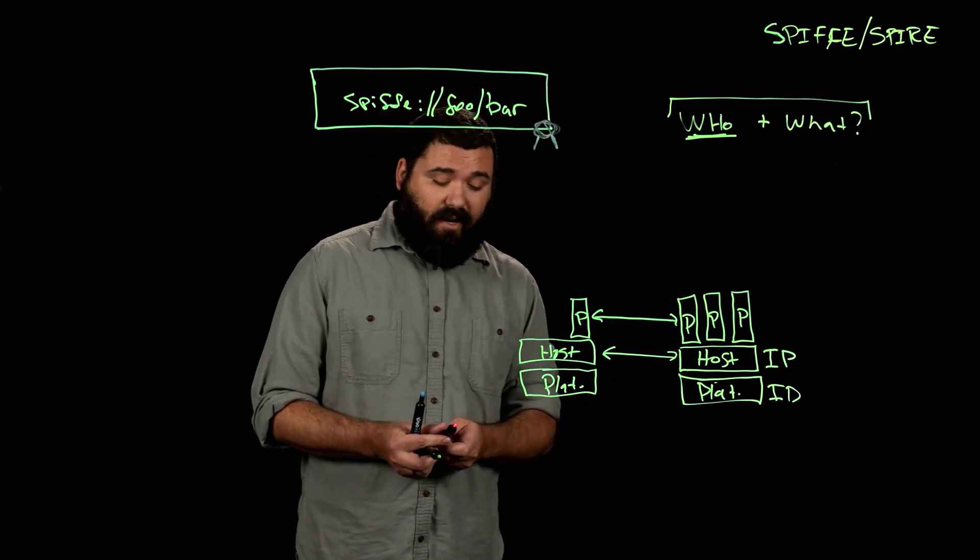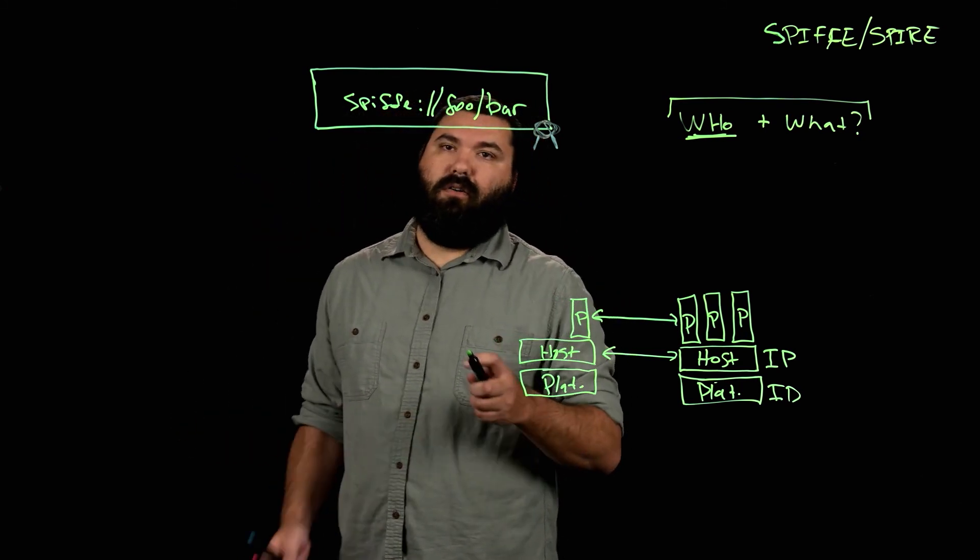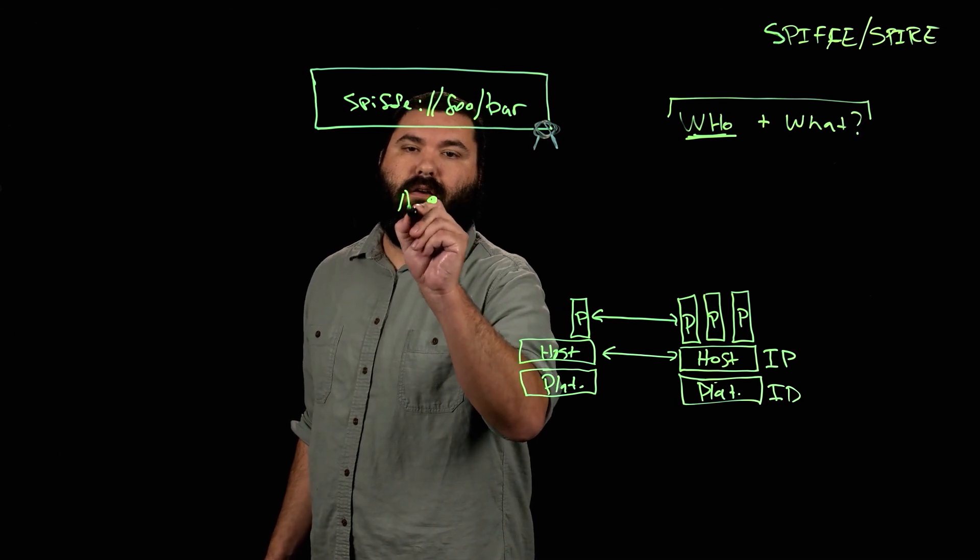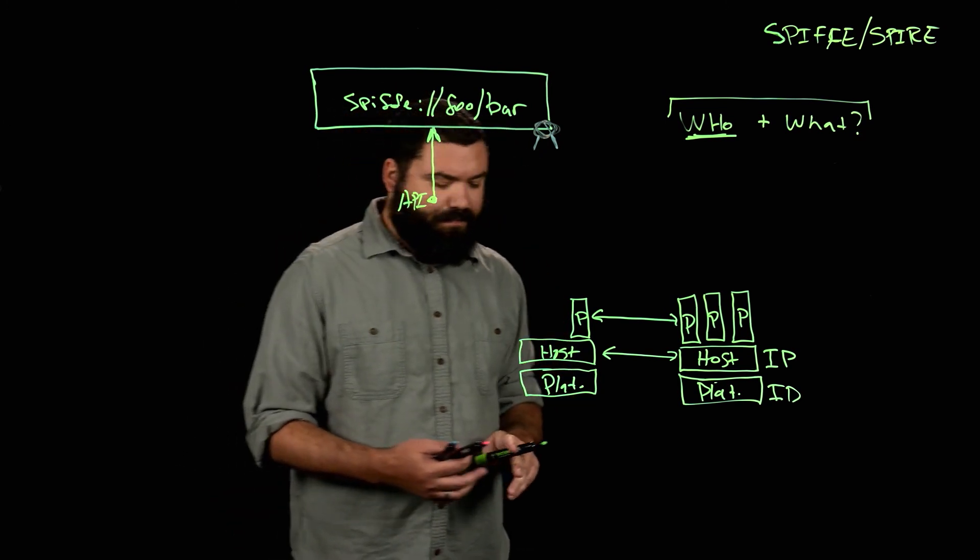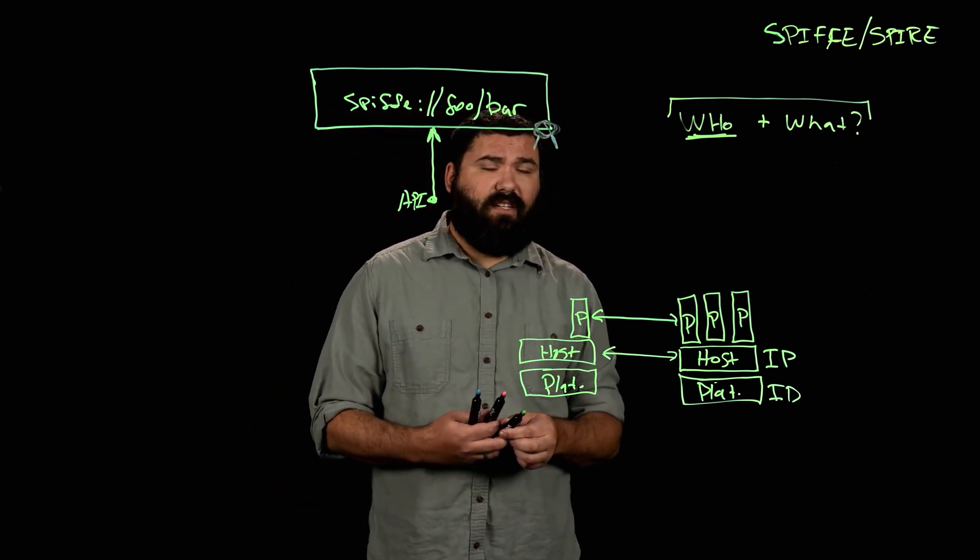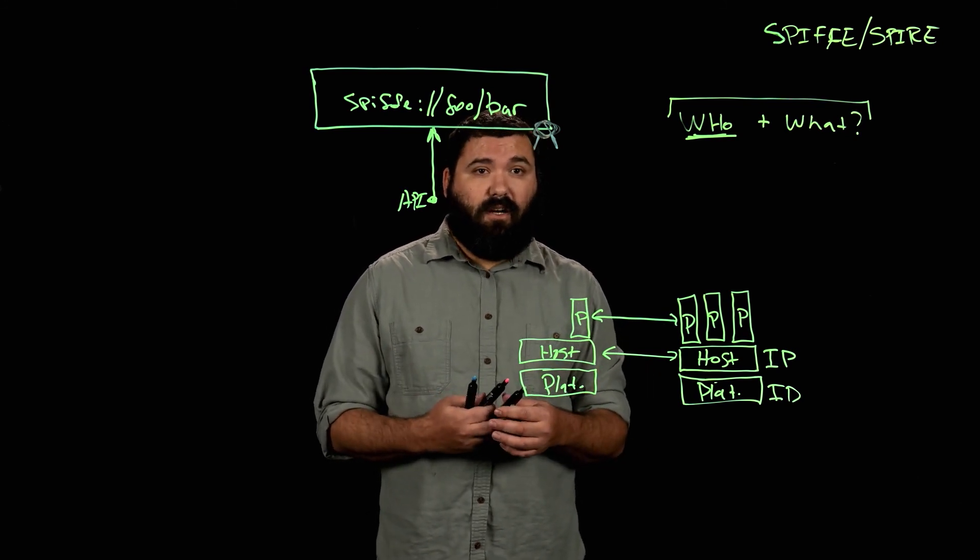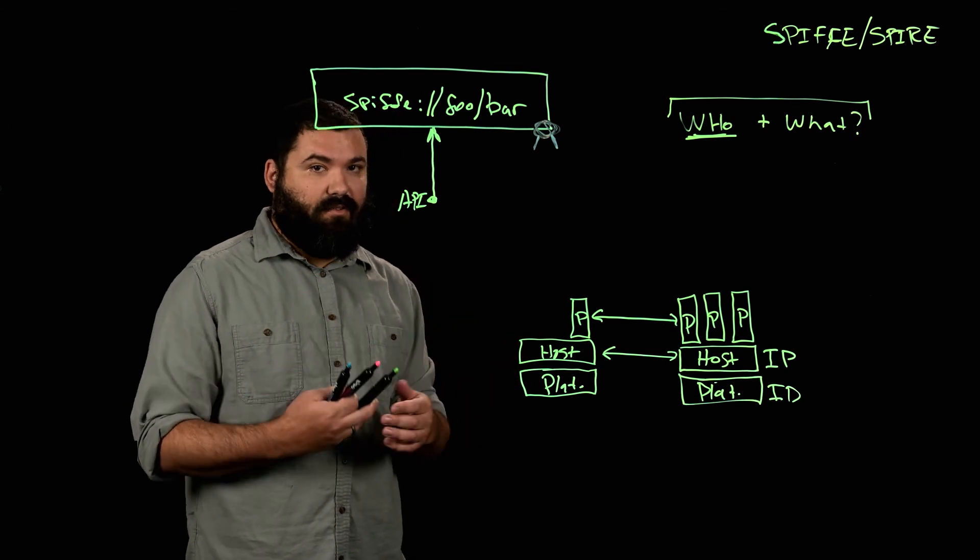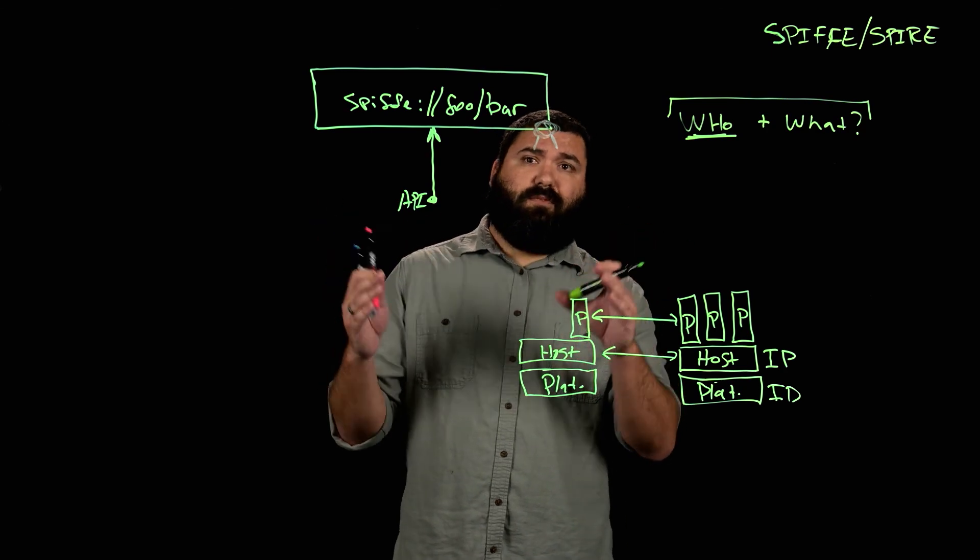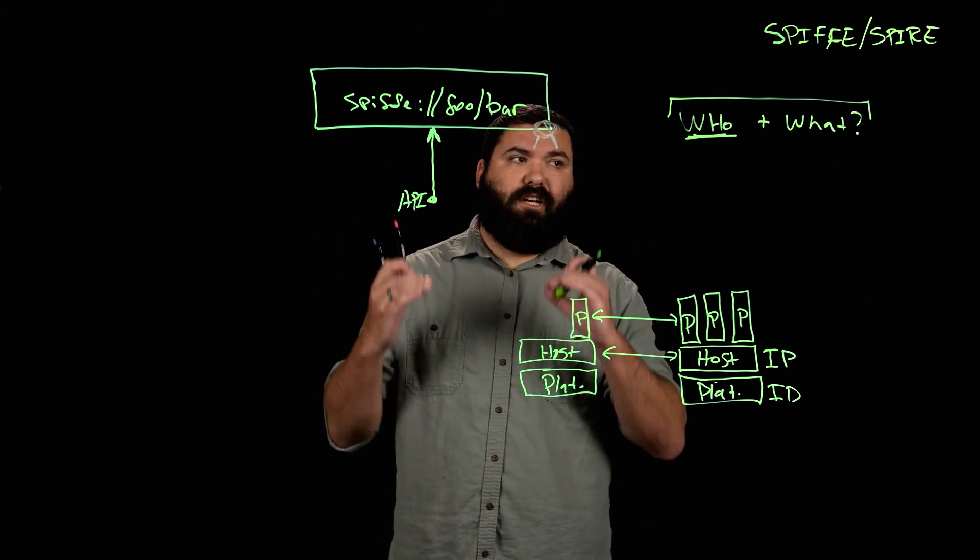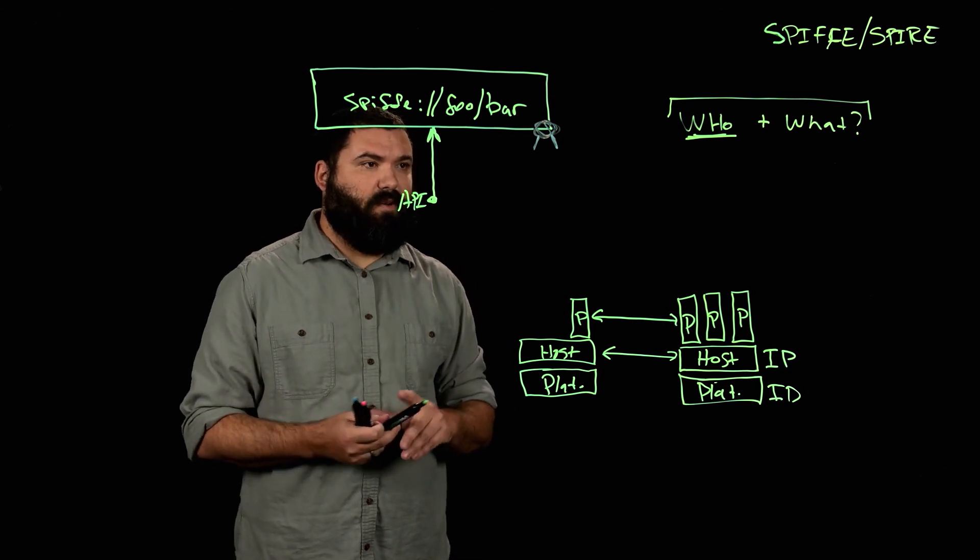The third thing that we need is a way to obtain this SVID. We have what's called a workload API that exposes it to workloads. Now, this SVID, there are many different types, but the one we see used most commonly is an X509 certificate. So you can imagine how that might be used for mutual TLS or other kinds of X509 based authentication. So Spiffe solves this problem with these three general sets of things, and each one of these is a specification that Spiffe has declared.